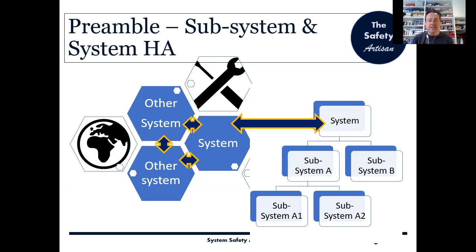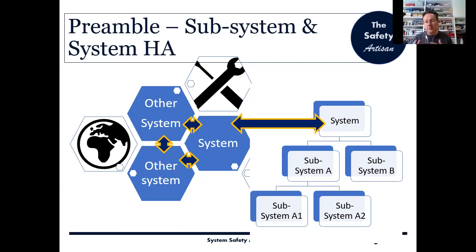Before we get started we need to explain the system model that the 882 is assuming. On the left hand side of the hexagons, we've got our system in the center which we're considering — maybe it interfaces with other systems, and they work within some kind of operating environment, hence the icon of the world. The system and maybe other systems are there for a purpose: performing some tasks or function, indicated by the tools. Then on the right hand side, the system is broken down into subsystems — subsystem A and B, and then A is further broken down into A1 and A2, for example.